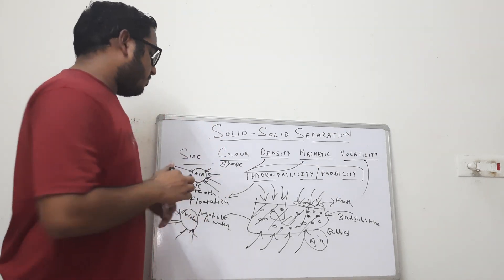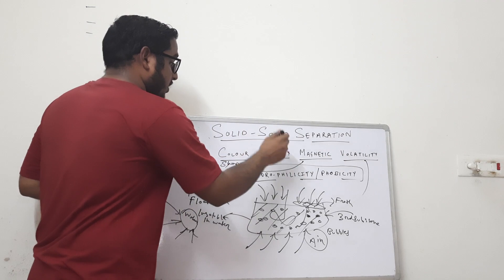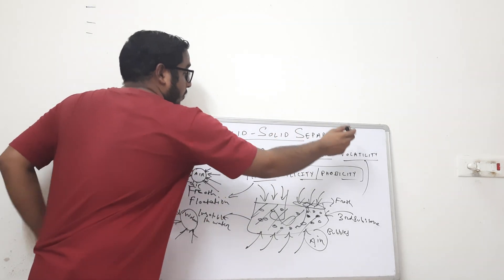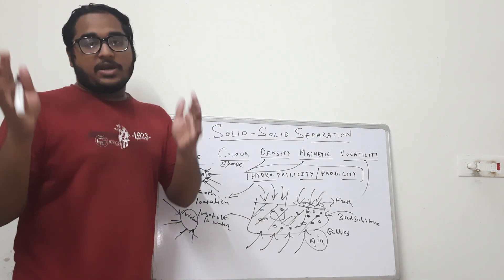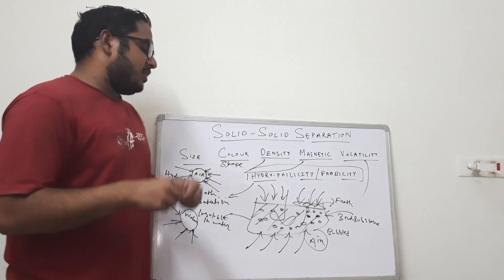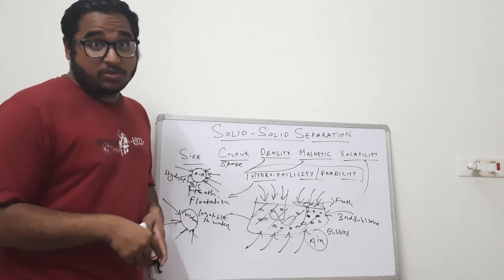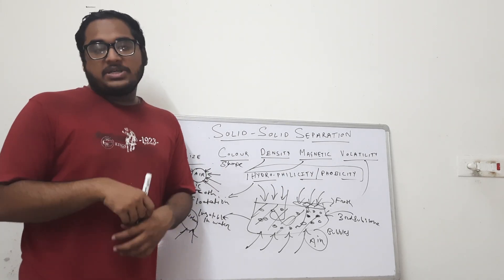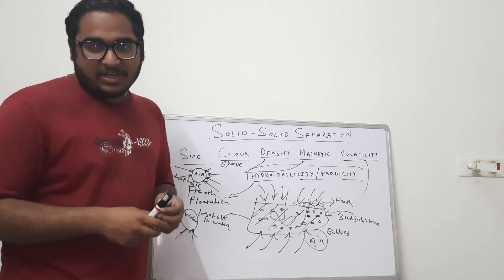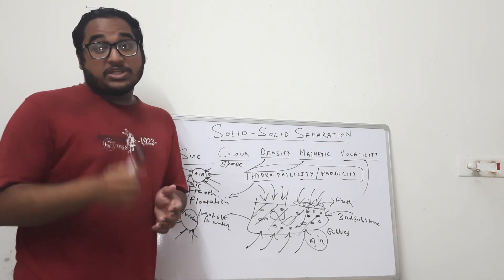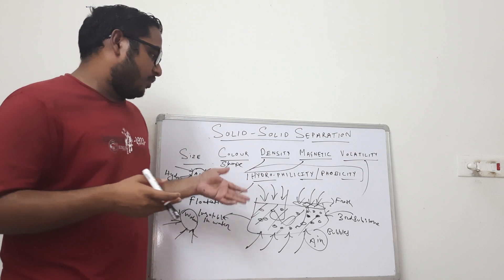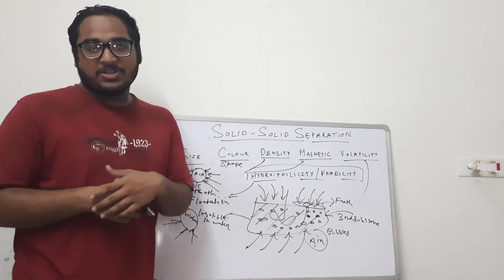In summary, solids can be separated from each other based on size, color, shape, density, magnetic properties, volatility, and finally hydrophilicity or hydrophobicity. That will be it for today on solid-solid separation. If you have any doubts please comment in the comment section, share this video with your friends, subscribe to our channel, and press the bell icon for regular updates. Thank you very much.